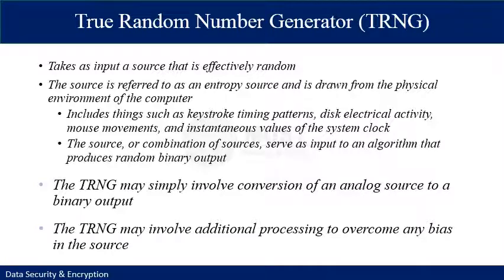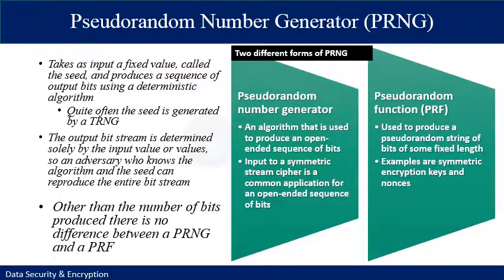A true random number generator takes input from a source that is effectively random, referred to as an entropy source. This is drawn from the physical environment of the computer and includes keystroke timing patterns, electrical activity, mouse movement, and instantaneous values of the system clock. These values cannot be guessed, which is why they are called true random. The source serves as input to an algorithm that produces a random binary output.